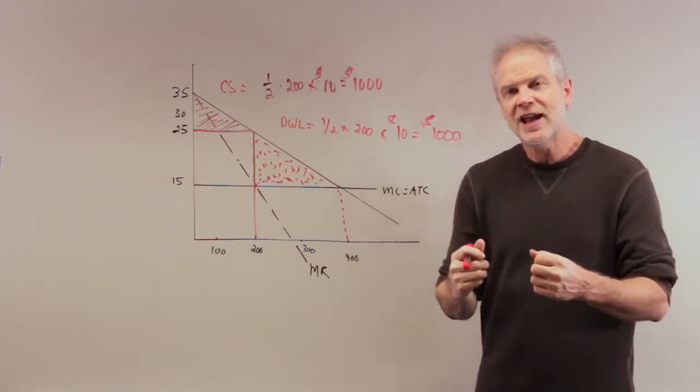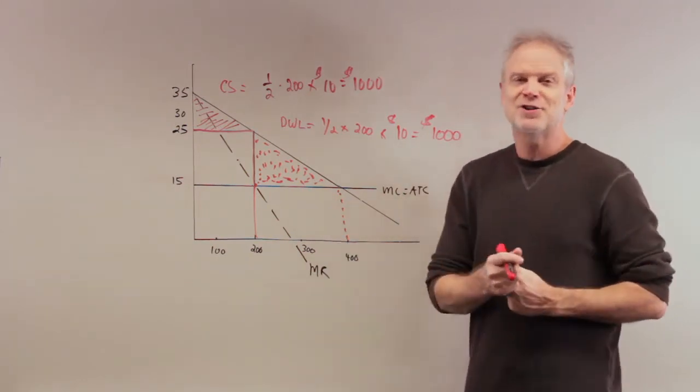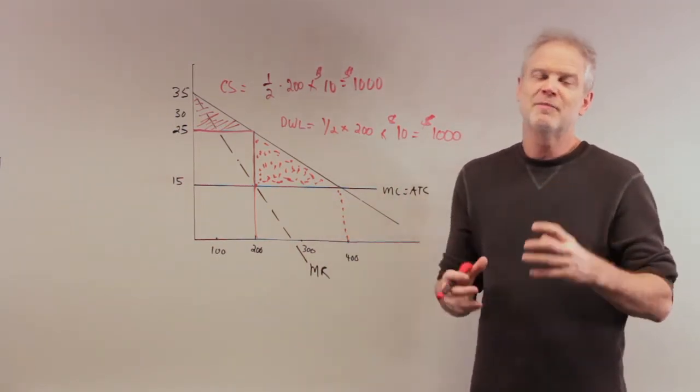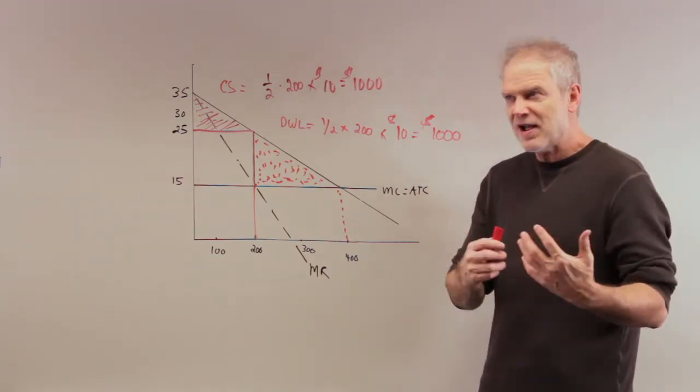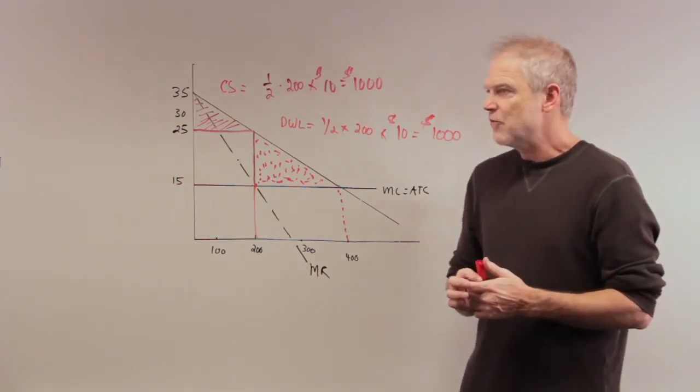Price discrimination depends crucially on the ability to segment markets. There's not perfect but sometimes other kinds of price discrimination. I want tourists to distinguish themselves from business travelers.